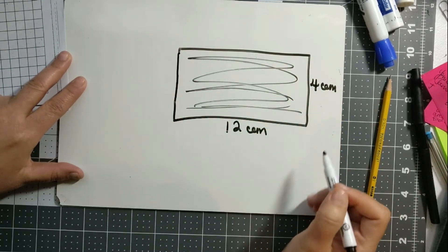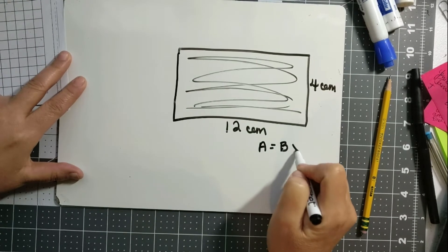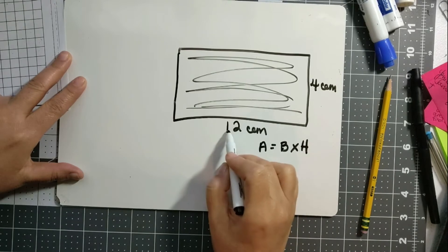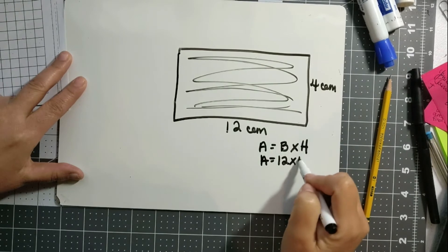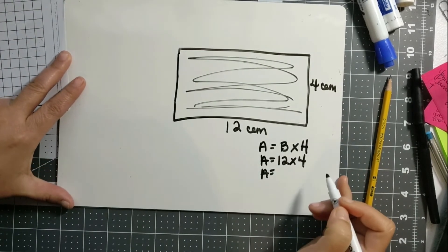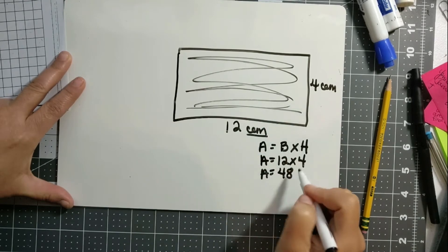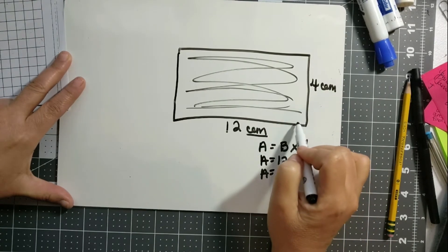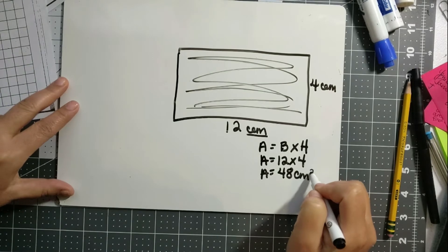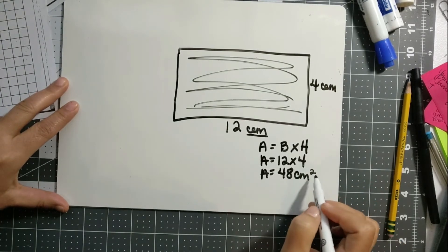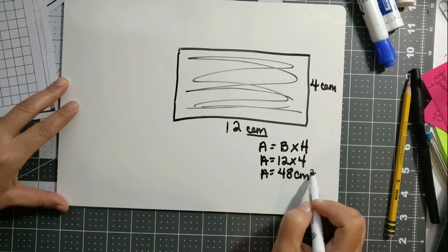Okay, we know that the formula is A equals base times height. So the base is 12, the height is 4, so we know that the area is 12 times 4, which is 48 centimeters. Now because we're talking about squares, I forgot to show you that here, you have to make sure and put a 2 on top because that means squared. Okay, so you've got to make sure that you have that 2 on top because it means squared.